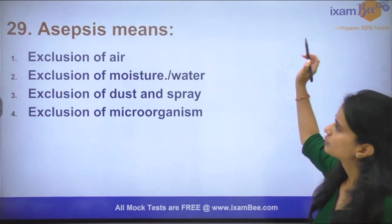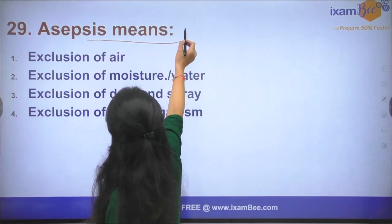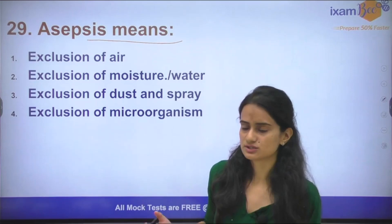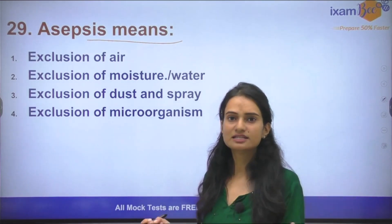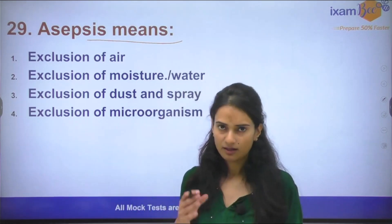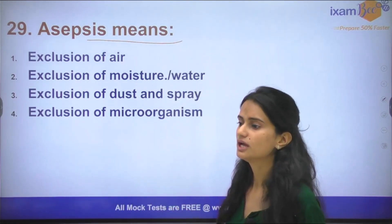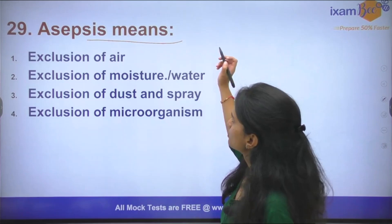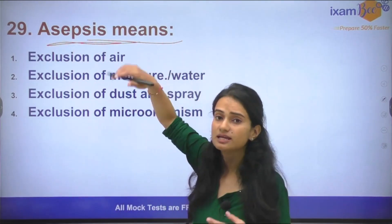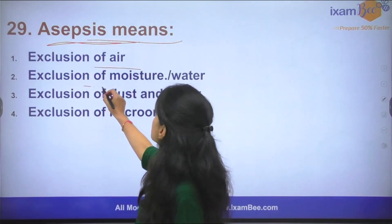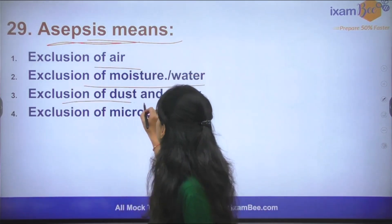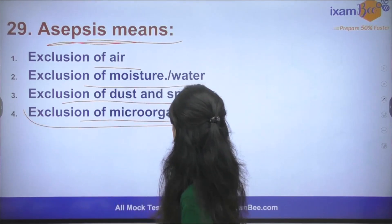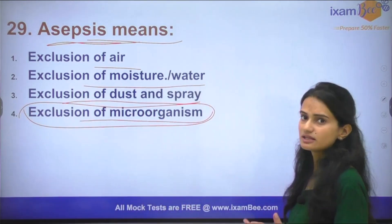Question number 29: Asepsis means what? We say that we must culture in aseptic conditions — whenever there is a disease, we culture its pathogen, so aseptic conditions are required so that no other causal agent grows. The options are exclusion of air, exclusion of moisture and water, exclusion of dust and spray, or exclusion of microorganisms. The answer is exclusion of microorganisms.